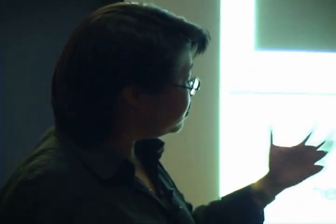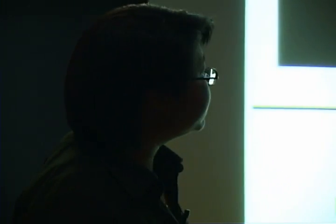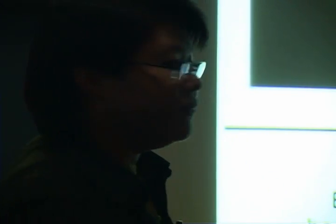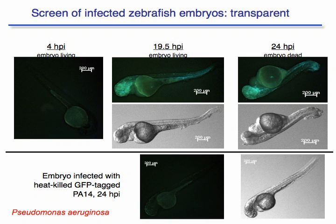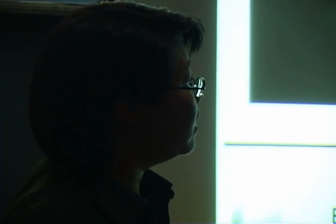You can now do this with zebrafish, which is one of the things my lab does. We use Pseudomonas aeruginosa — the most resistant gram-negative pathogen in hospitals, accounting for 90 percent of deaths in cystic fibrosis patients and a major cause of death in chemotherapy patients, transplants, and immunocompromised patients. We introduce a constitutive GFP into Pseudomonas so we can follow infection by microinjecting it into zebrafish embryos. At four hours post-infection you see early infection; at 19.5 and 24 hours you can watch in real time as infection progresses. We can also add small molecules or anti-Pseudomonas antibiotics to rescue the embryos. Heat-killed Pseudomonas has no effect on the embryo.